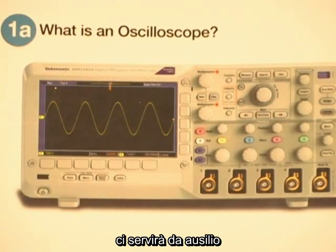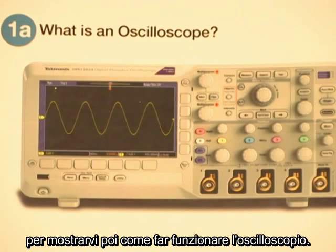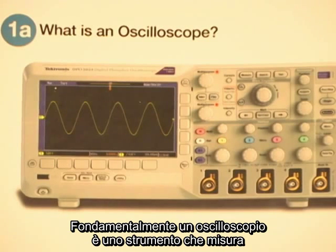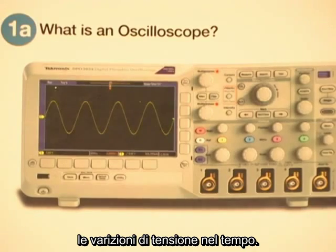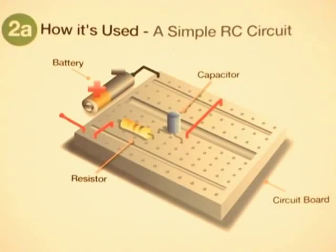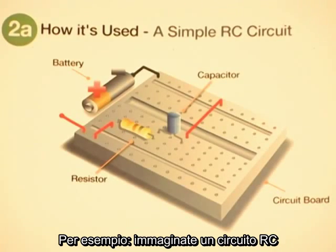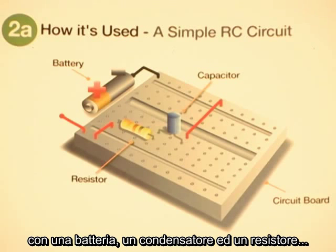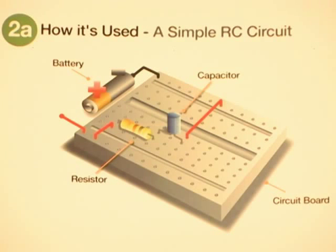At its heart, an oscilloscope is a device for seeing how the voltage of a signal varies over time. For example, imagine a simple RC circuit with a battery, a capacitor, and a resistor.